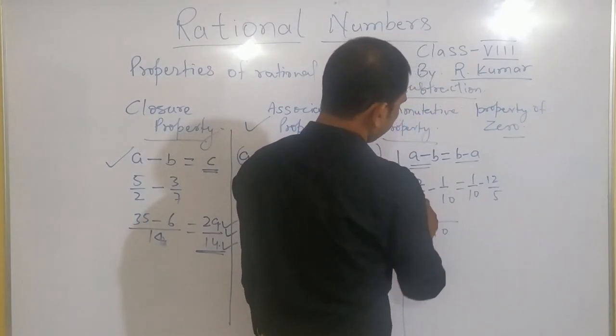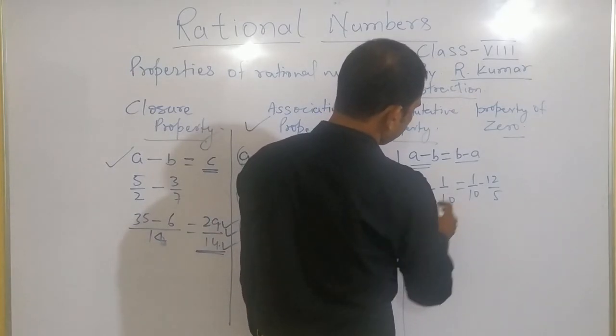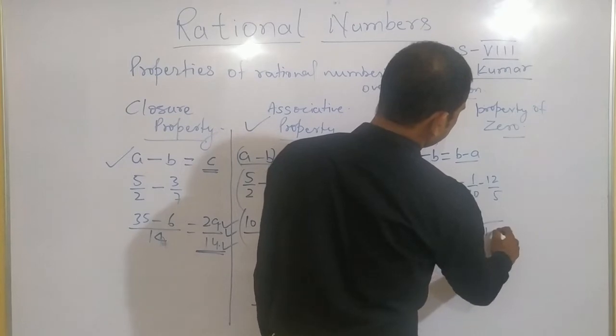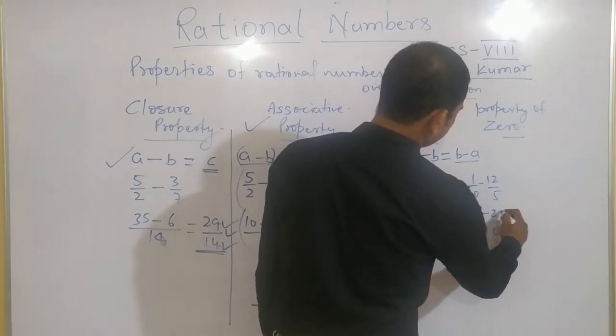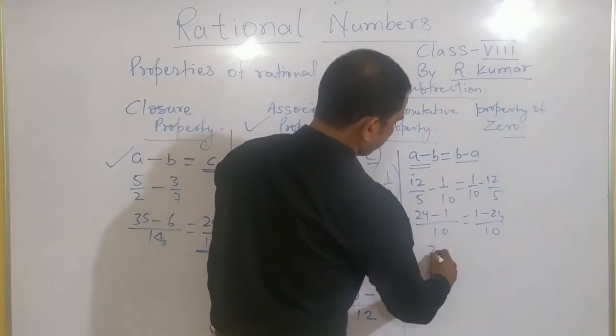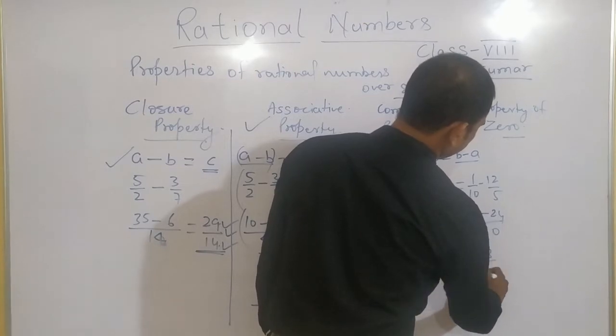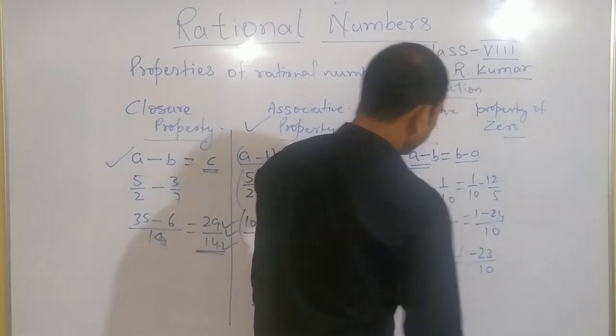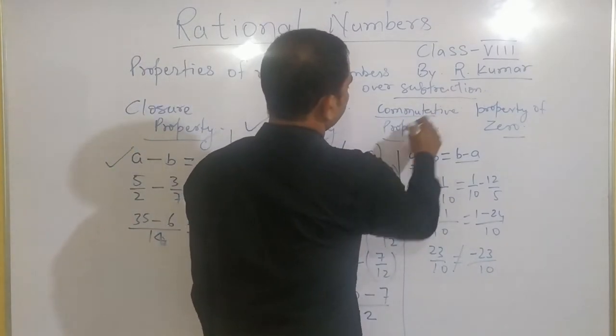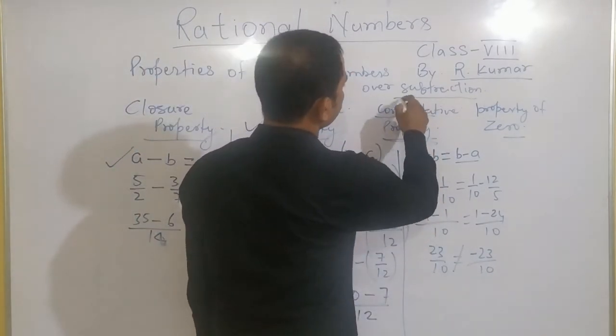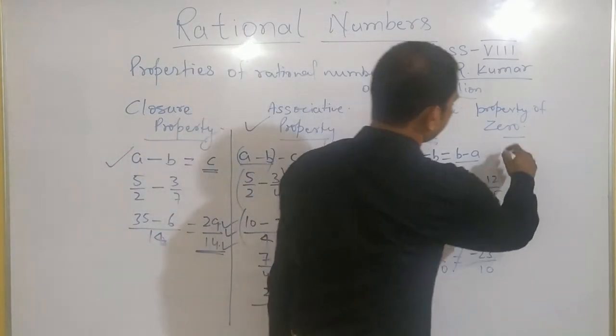LCM will be 10 only, 5 times 2 gives 10 and 12 times 2 gives 24 minus 1. Here coming 23 by 10 and this side minus 23 by 10. This is also, once again, not coming the same. Means what? Commutative property also does not satisfy for subtraction.